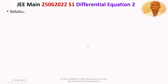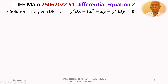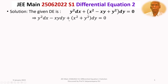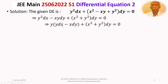We now discuss the solution in detail. We bring out the −xy dy term from the bracket to the outside, writing the equation as y² dx − xy dy + (x² + y²) dy = 0. From the first two terms y² dx − xy dy, we take y common, giving y(y dx − x dy) + (x² + y²) dy = 0.